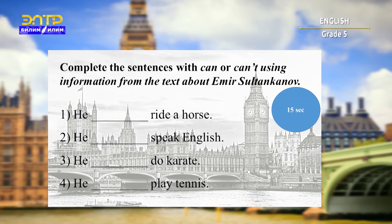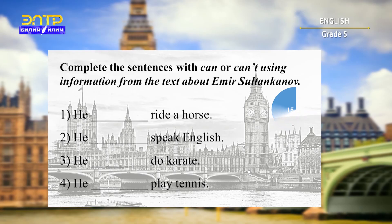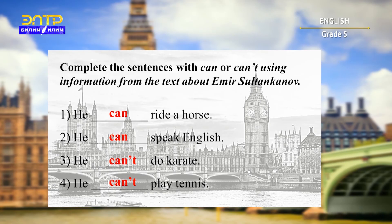Now please complete the sentences with 'can' or 'can't' using information from the text about Emir Sultan Kanov. You have only 15 seconds. Let's check: He can ride a horse. He can speak English. He can't do karate and he can't play tennis.